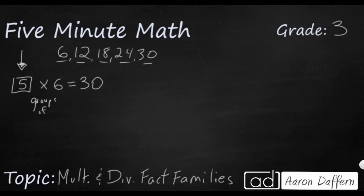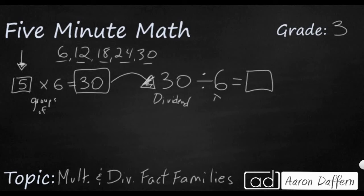Another way we could use fact families would be to flip around. Take our product right here. Your product always becomes your dividend if you want to make a related division fact. And then you can put either of the factors as your divisor. In this case, we're going to say 30 divided by 6. That's going to give us the number we're looking for. This is our dividend. It is being divided by the divisor. And the answer is going to be our quotient. And if we know our facts, we can say 30 divided by 6, that's going to be 5, just like it is in this factor over here.